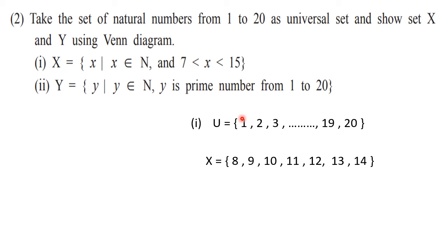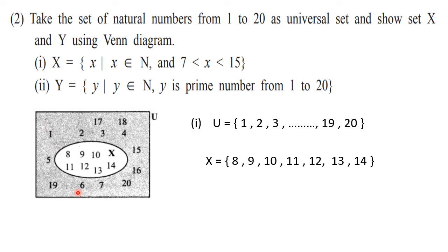For the Venn diagram: show universal set by rectangle with U written outside, then draw set X totally inside U. Write all elements of X — 8, 9, 10, 11, 12, 13 and 14 — inside. The remaining elements from U, that means 1 to 7 and 15 to 20, are written in the remaining space. This remaining region gives us X complement. X and X complement together form universal set U.